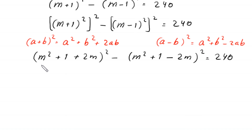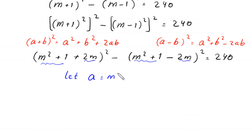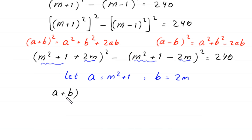Now here we have m^2 + 1 in both terms, and 2m in both terms. So we suppose that a = m^2 + 1 and b = 2m. Substituting a and b, this equation becomes (a + b)^2 minus (a - b)^2 is equal to 240.